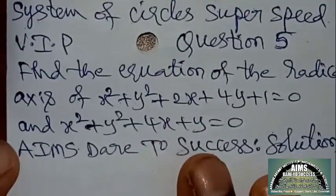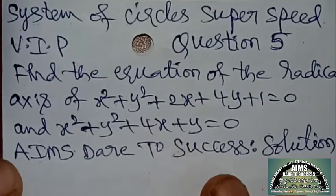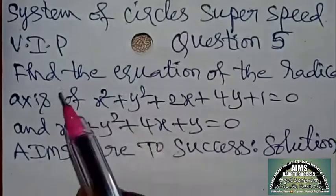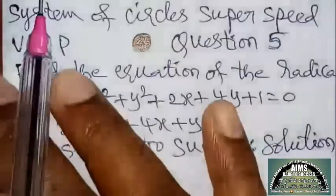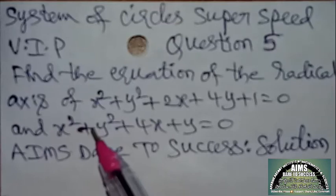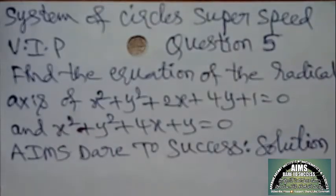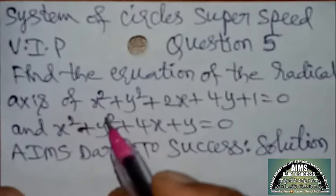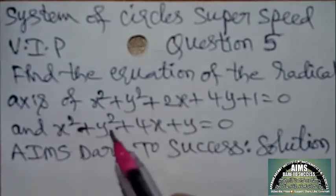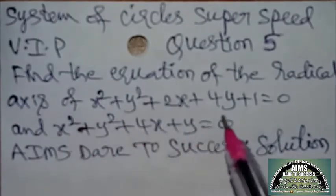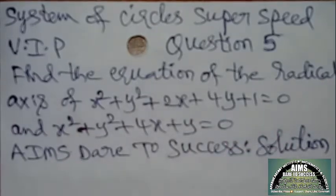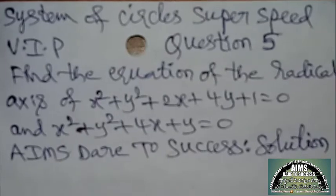One more question — similar model, very important and interesting question. System of circles, super speed, VIP question part 5. VIP means very important previous question. Find the equation of the radical axis of x² + y² + 2x + 4y + 1 = 0 and x² + y² + 4x + y = 0.